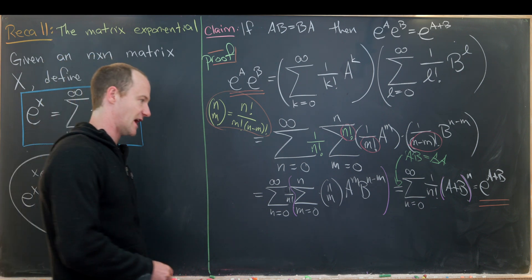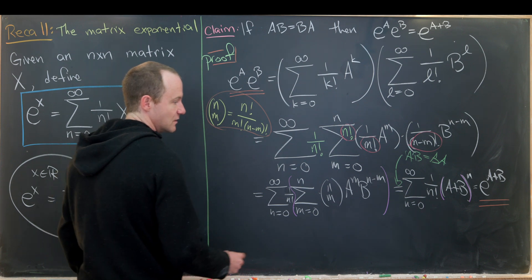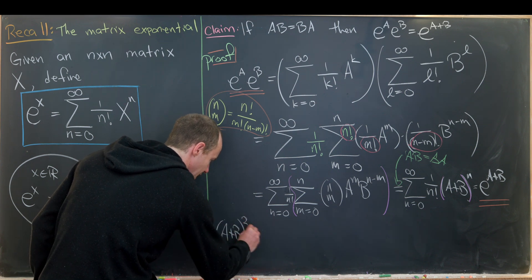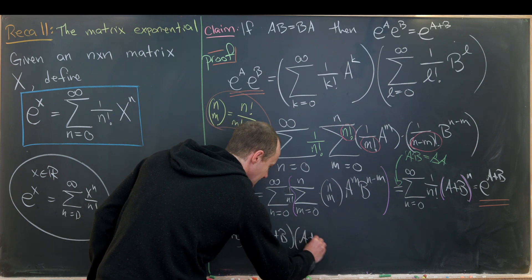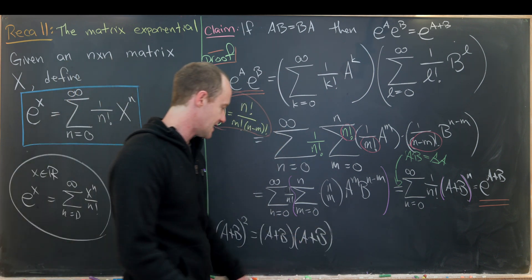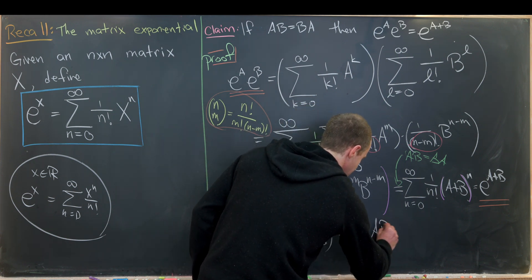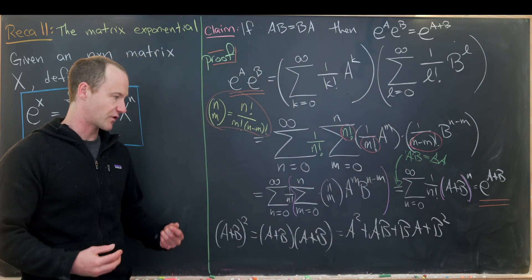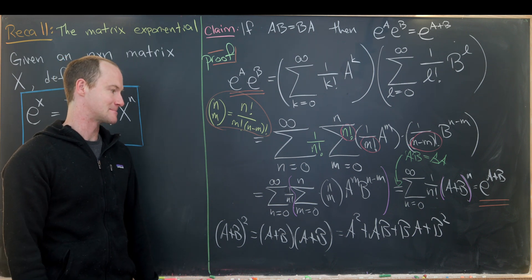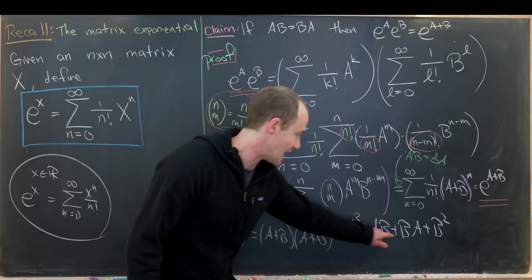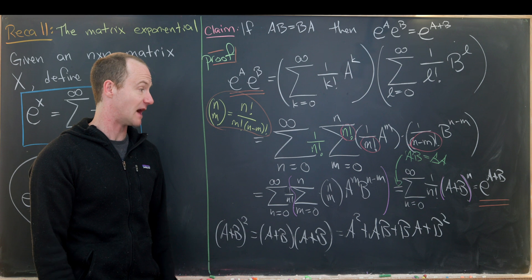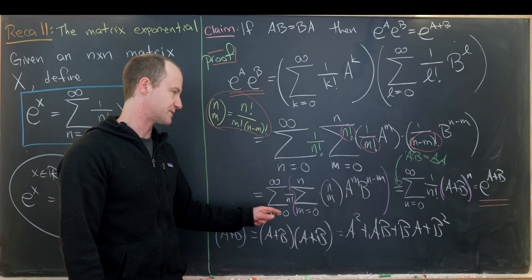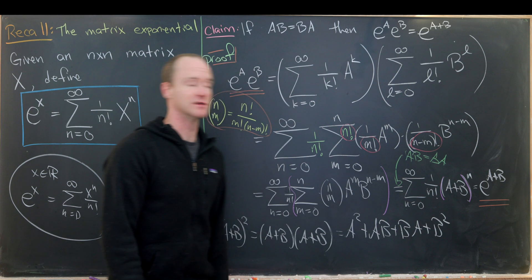Let's highlight how we use that fact by looking at the n equals two term. We have something like (A plus B) squared, which is (A plus B) times (A plus B). We get A squared, then AB plus BA, then B squared. With matrices we should write it like that first because we don't always have commutativity. But in this special case, we do have commutativity, so we can commute BA to AB and combine them. That gives us the binomial coefficients one, two, one — corresponding to the n equals two case.